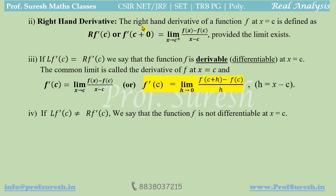The right-hand derivative of a function f at x equal to c is defined as Rf'(c), where R stands for right. Rf'(c) equals the limit as x tends to c plus of f(x) minus f(c) divided by x minus c, provided the limit exists.